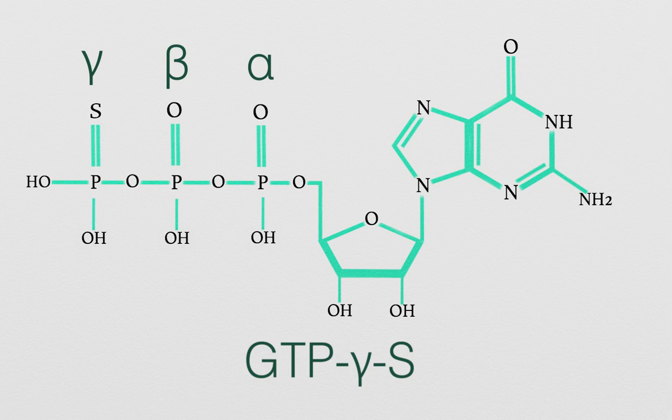This GTP has a sulfur atom in the place of an oxygen in its third phosphate group, which prevents hydrolysis by a GTPase even when bound by a GAP. This creates a permanently active form of the GTPase, allowing researchers to observe the effects of GTPase when it is functional.